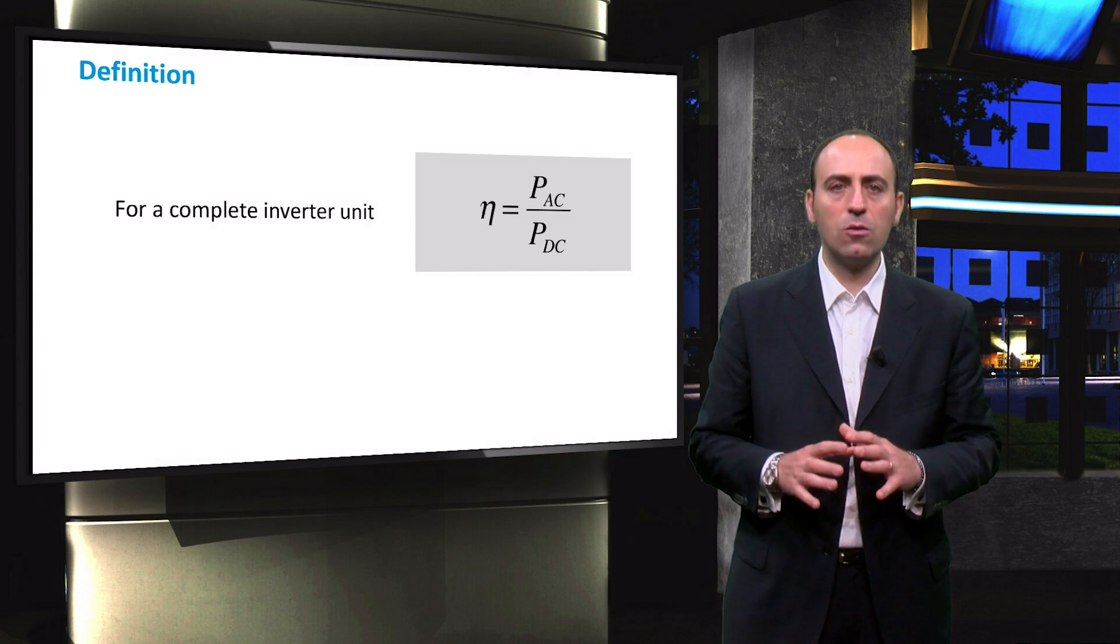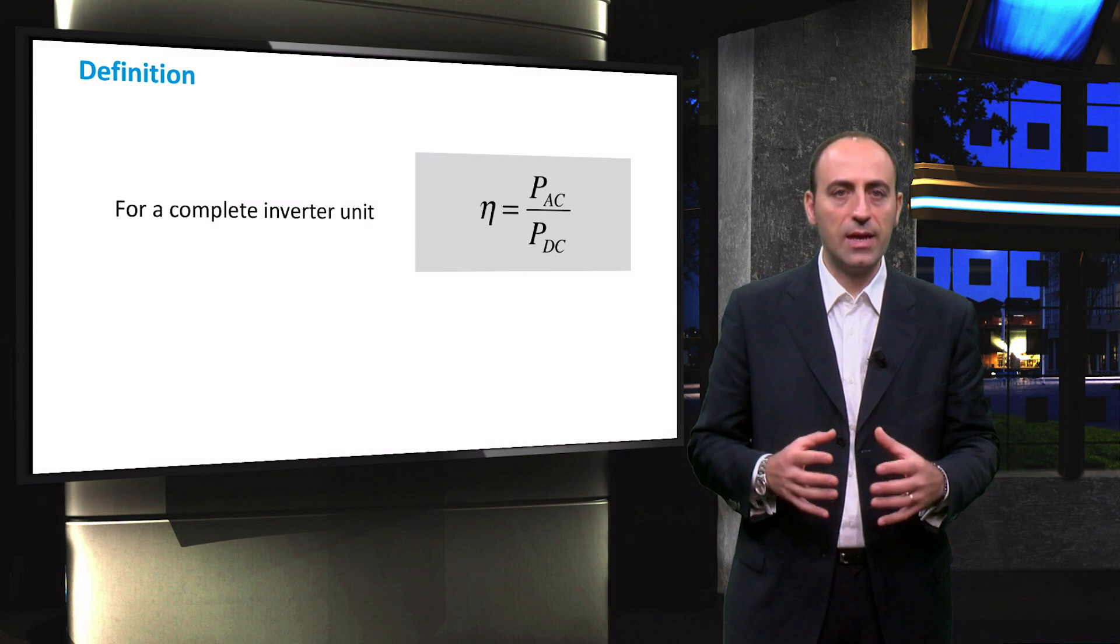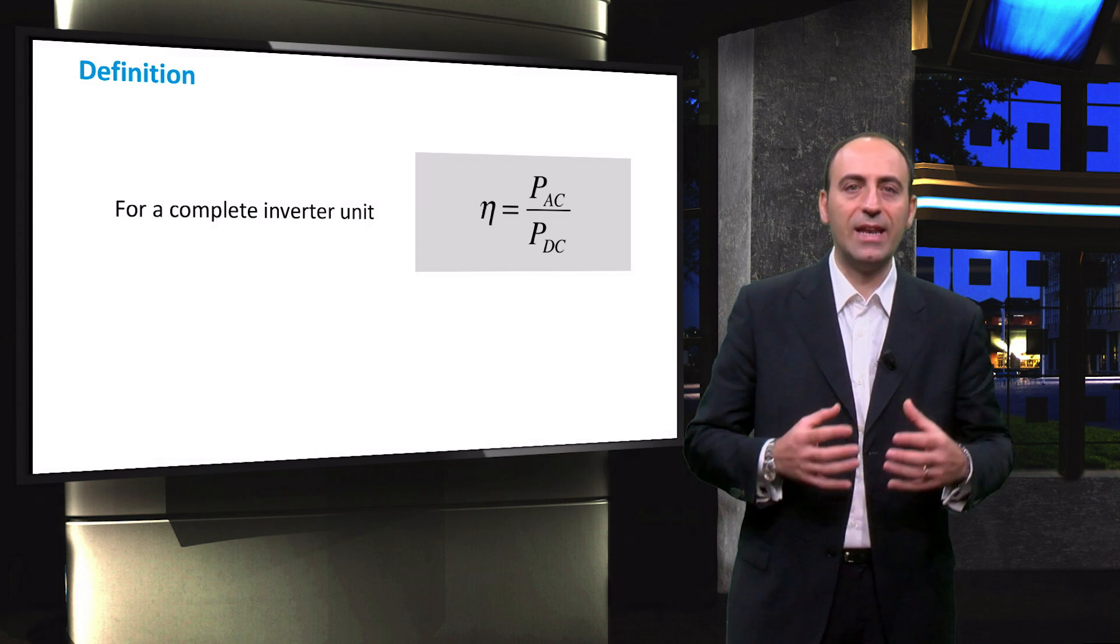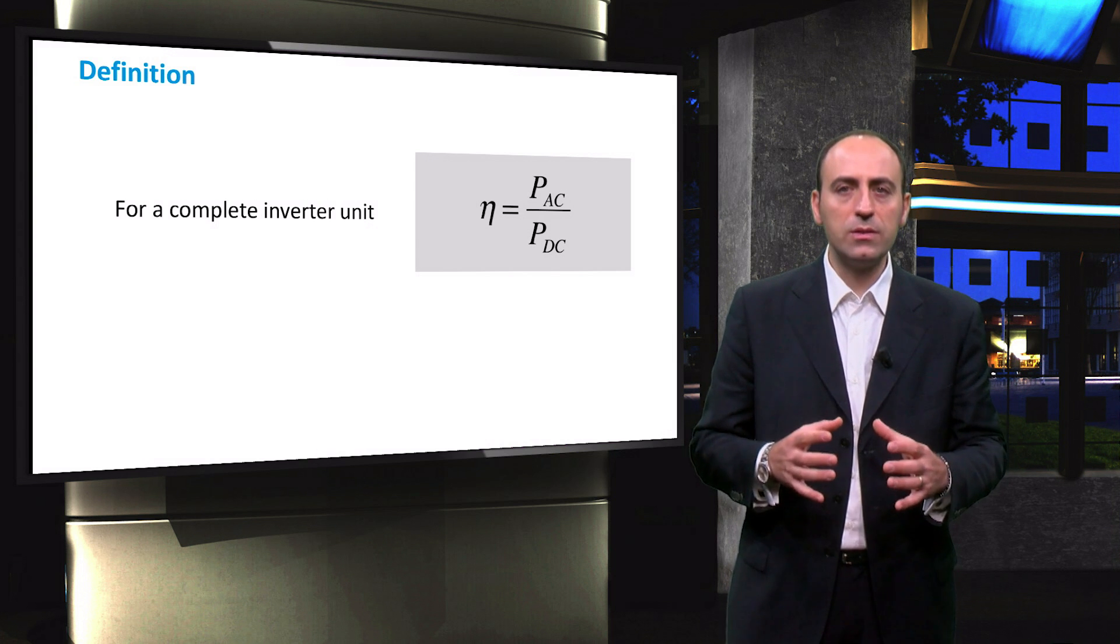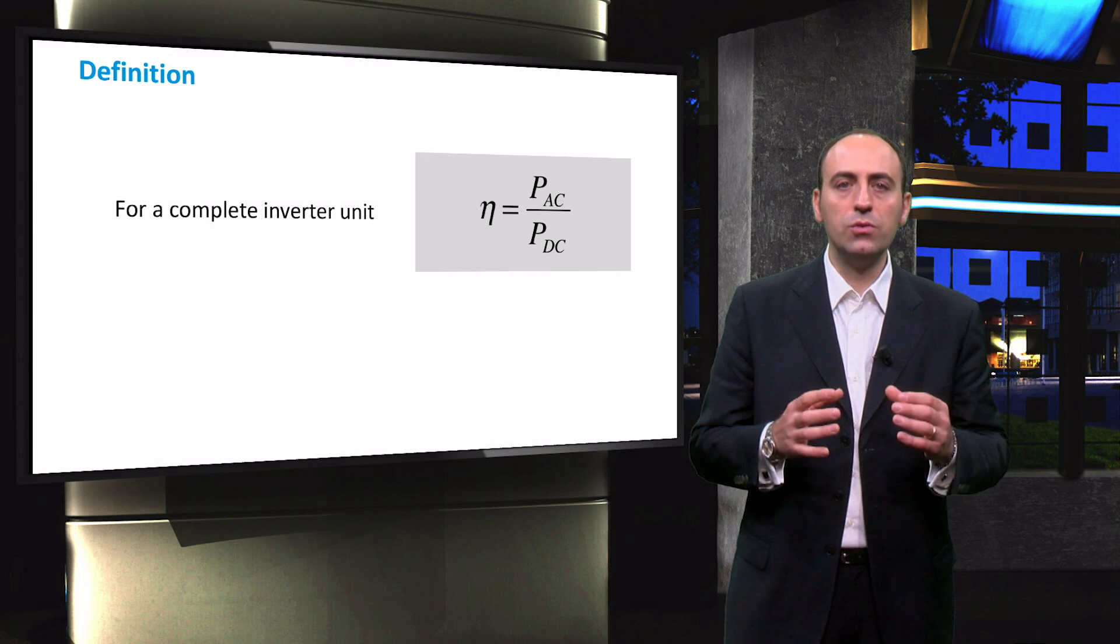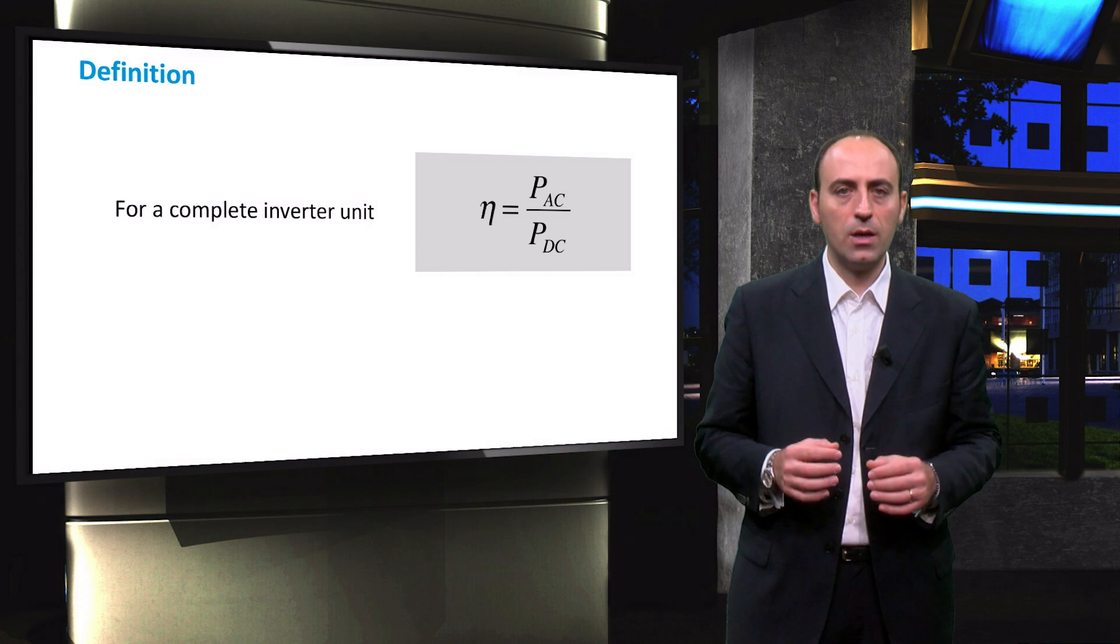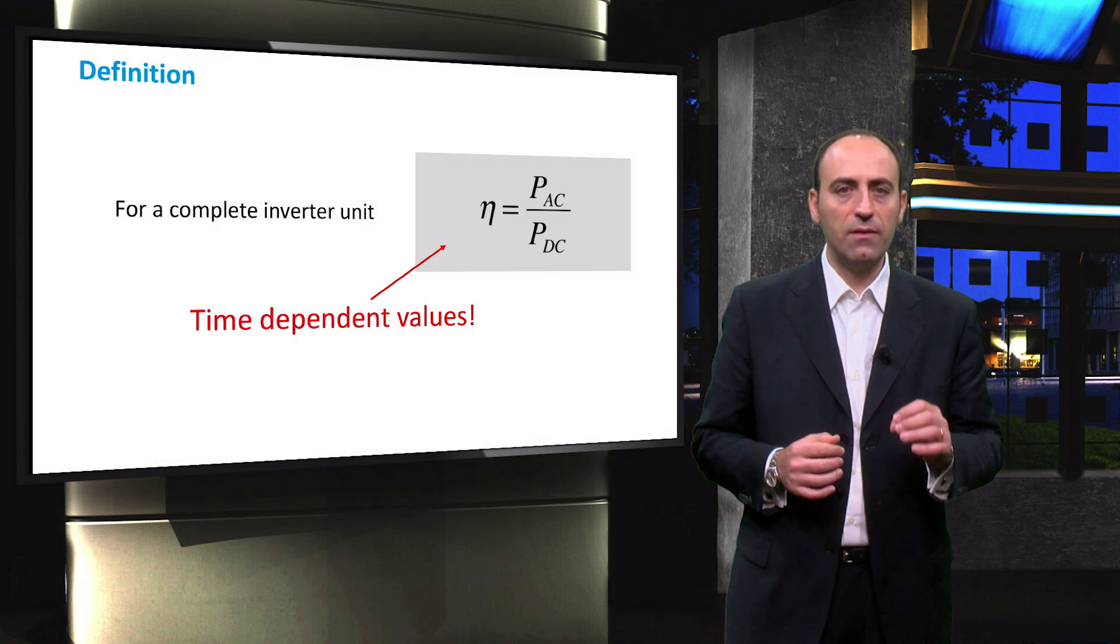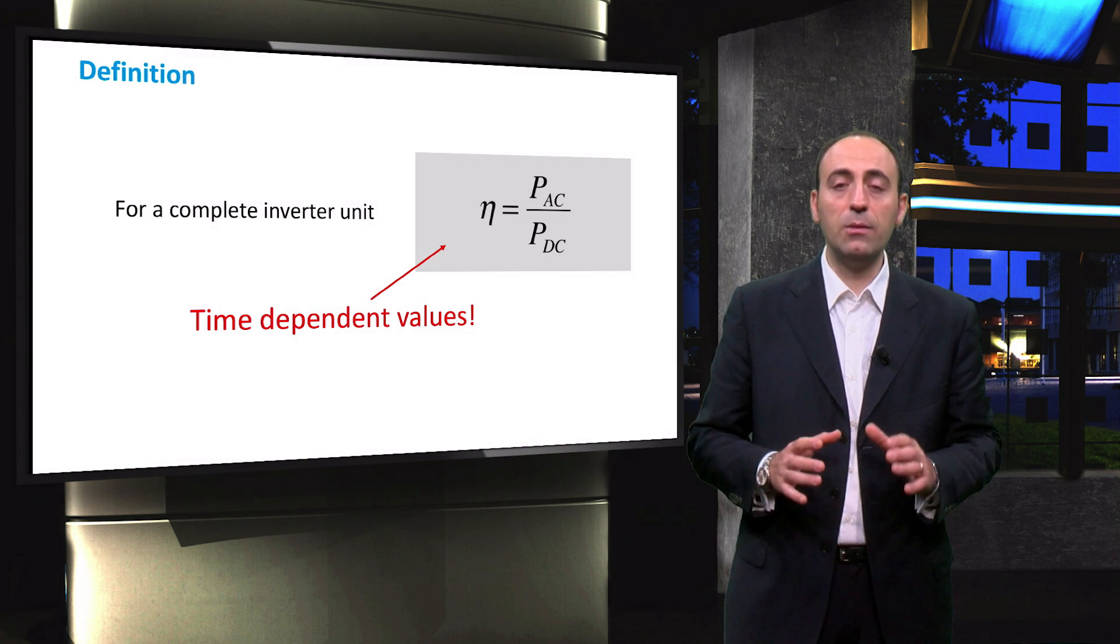This definition comprises the complete inverter unit. Since the real inverter has many components and because of a lack of detailed data from inverter manufacturers, some models have been developed to describe the efficiency. These models are based on empirical formulas. It is important to note that the efficiency here reported is an instantaneous value,